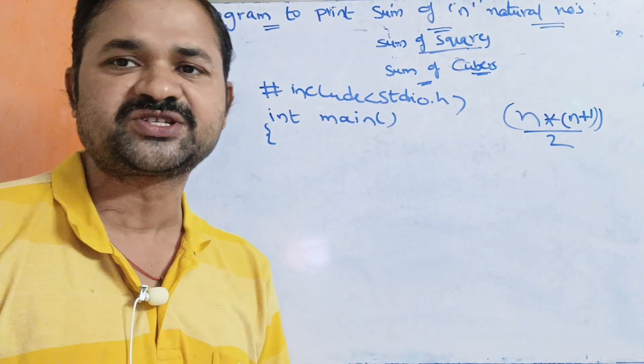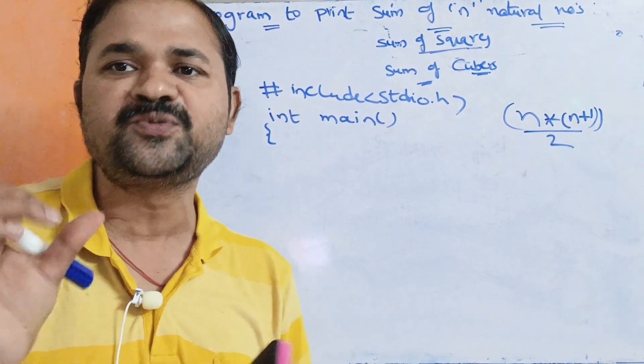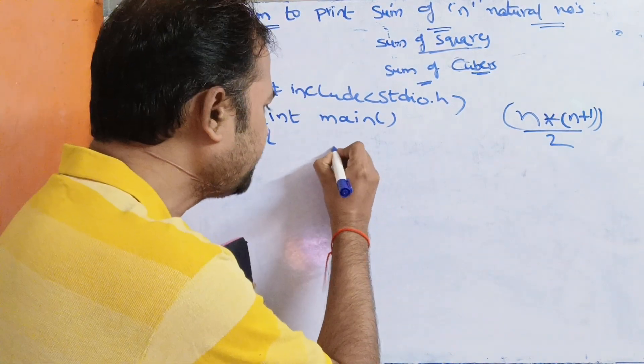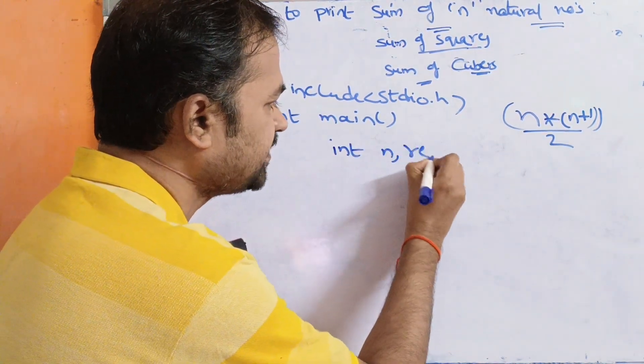Next we have two variables. n is the input variable. res is the output variable where we store the sum. So we require two variables: int n, res.